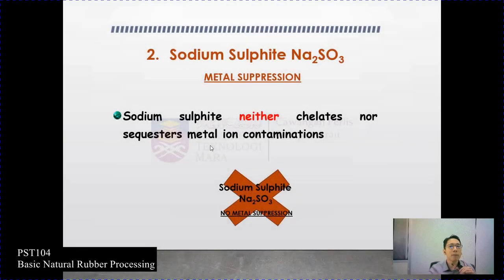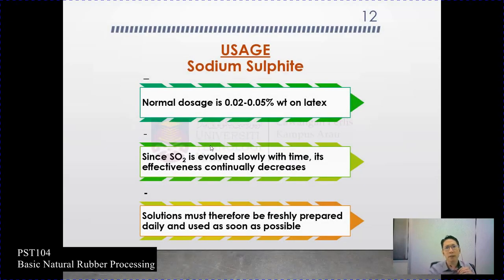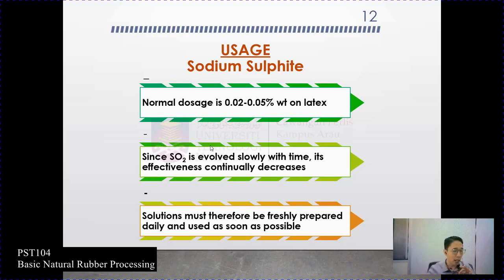The problem is sodium sulfite is not like ammonia — it does not suppress any metal or sequester metal iron contamination. That is the difference. For the usage of sodium sulfite, the normal dose used is 0.02 to 0.05 percent weight on latex. Since sulfite evolves slowly with time, its effectiveness continually decreases. In order to produce sulfite action, you need to add water.